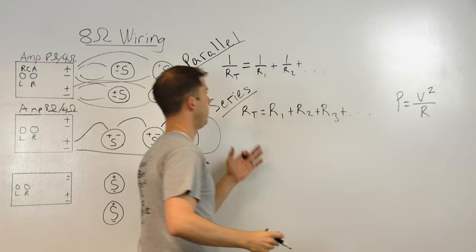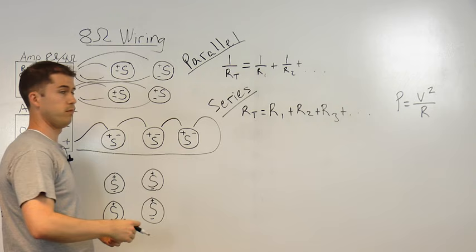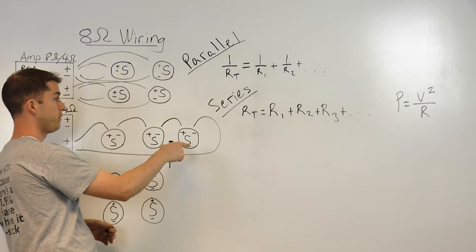Alright, so here's our calculation to determine the total resistance for wiring it in series. Very simple. You add up the total resistance of all the speakers that you're using. So, since we have 1, 2, 3 speakers at 8 ohm a piece, our total resistance is 24 ohms.